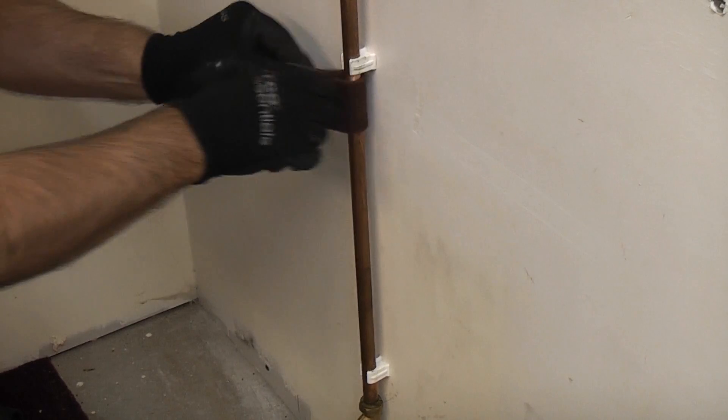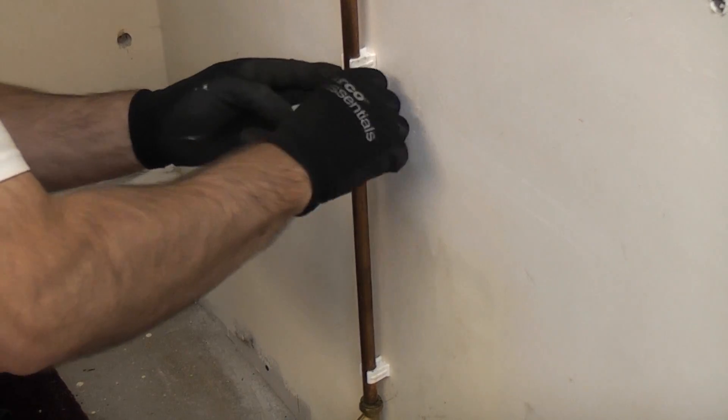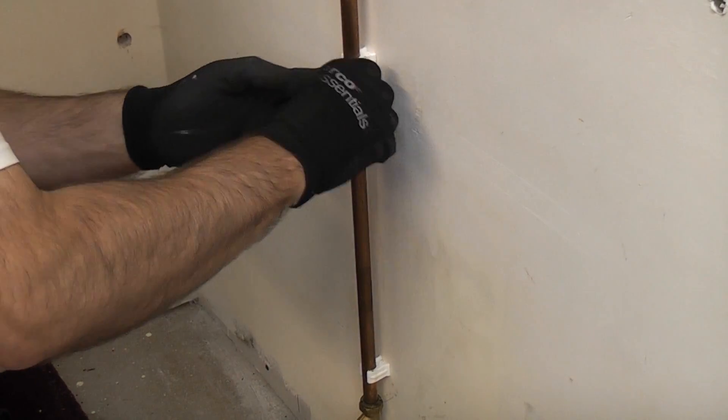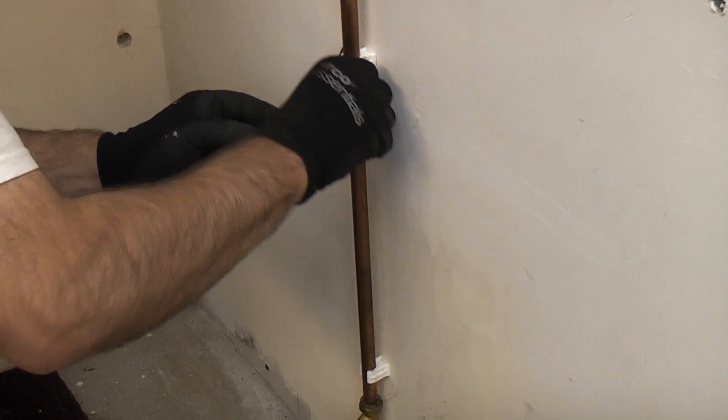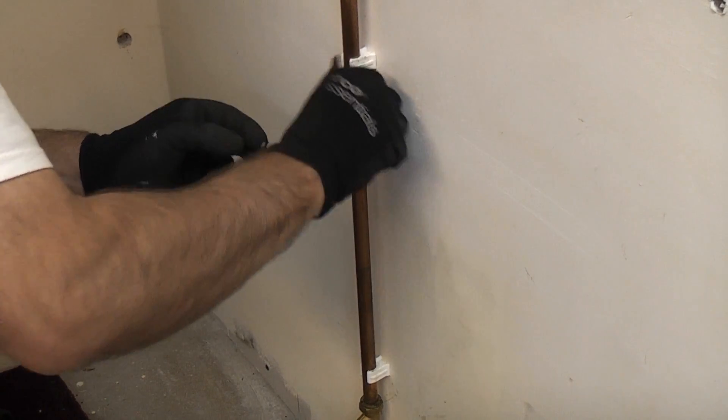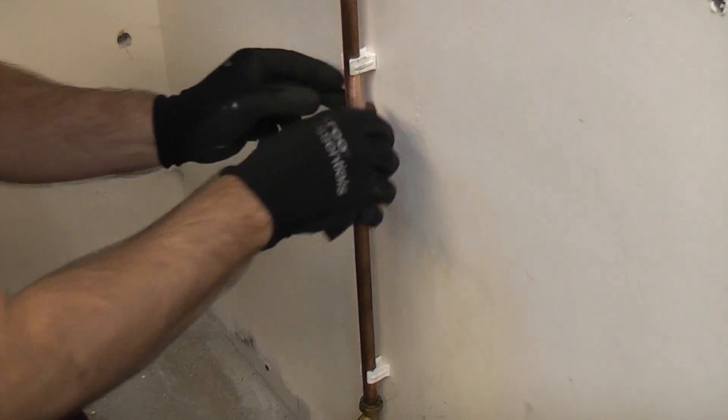If you're not sure that the copper pipe that you are working on is part of the earthing system, it is always a good idea to use something like this. You can actually buy kits now for doing this which make it a lot easier.